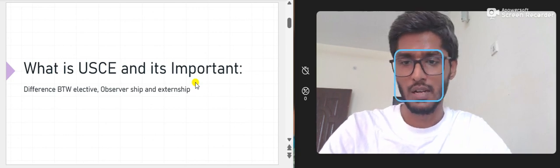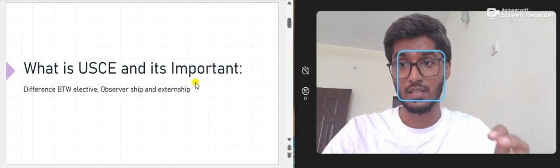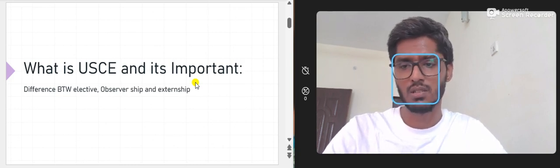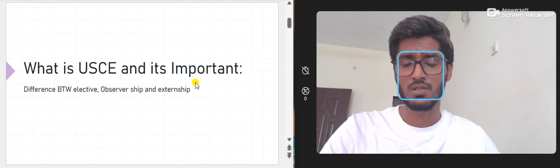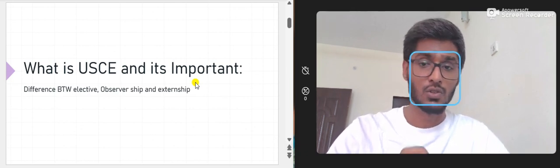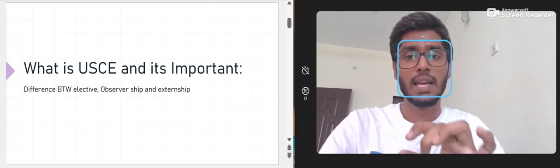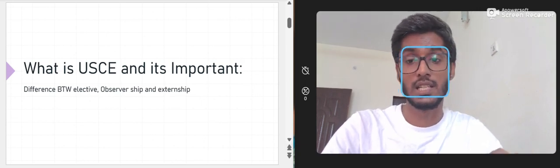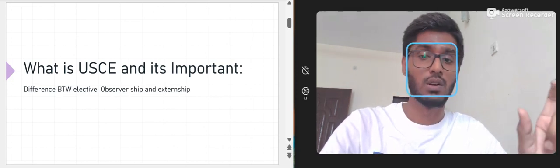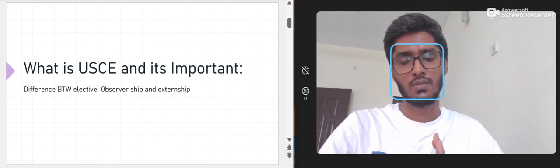Briefly, use your social media to strengthen your CV. Make an account on LinkedIn, Twitter, Facebook, and Instagram. However, Facebook and Instagram have a lot of distractions, so I recommend focusing on LinkedIn and Twitter. On these platforms you can post that you are actively looking for a USCE — like a United States clinical observership, externship, or elective.